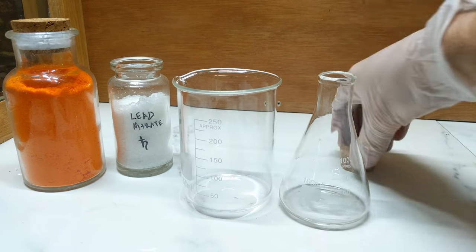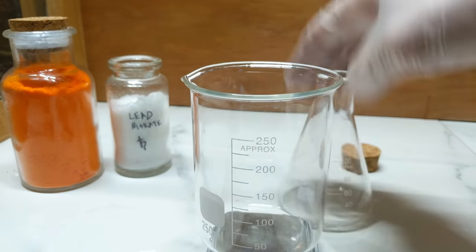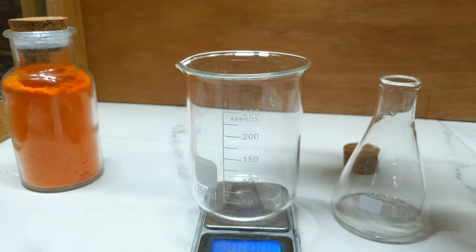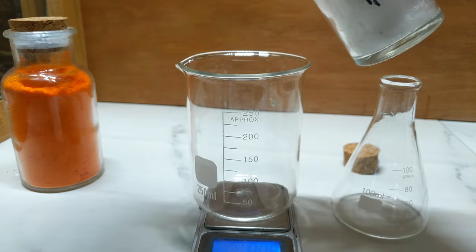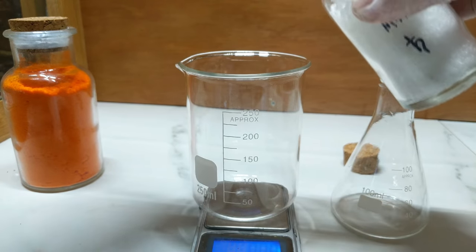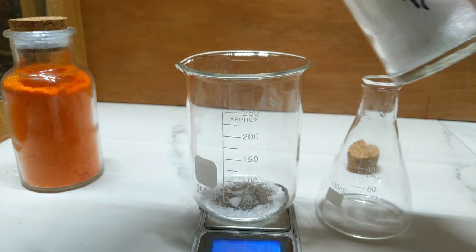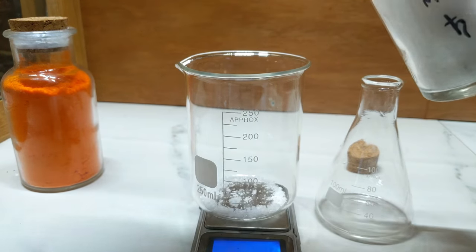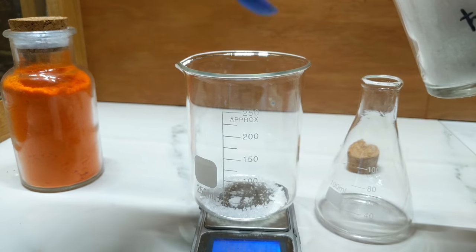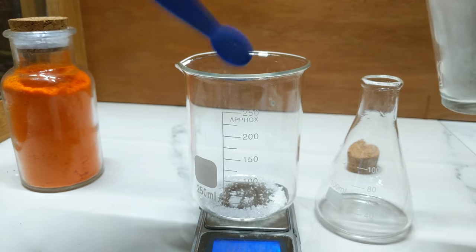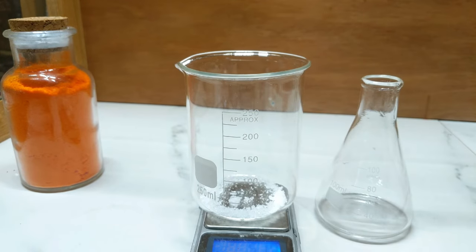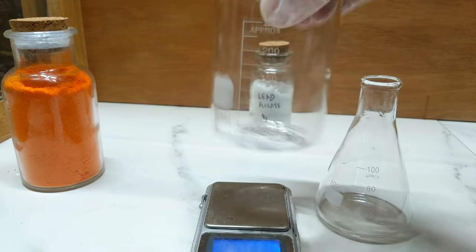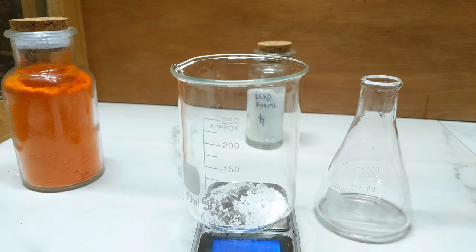We're going to take, so we just have on the scales here, we'll be putting five grams of lead nitrate crystals. Lead being very heavy, it doesn't take much to get to five grams. That already, as you can see there, that very small amount is five grams.